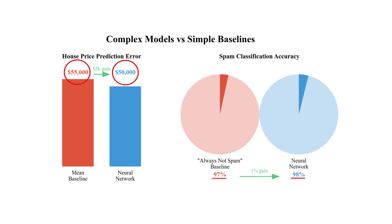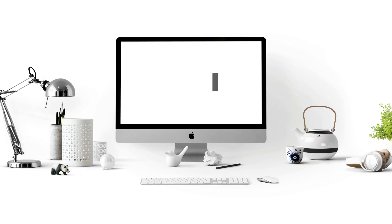Test simple models first. If a linear regression performs nearly as well as your neural network, you're probably overcomplicating things. A good baseline also helps catch data leakage — if your model seems too good to be true, it probably is.